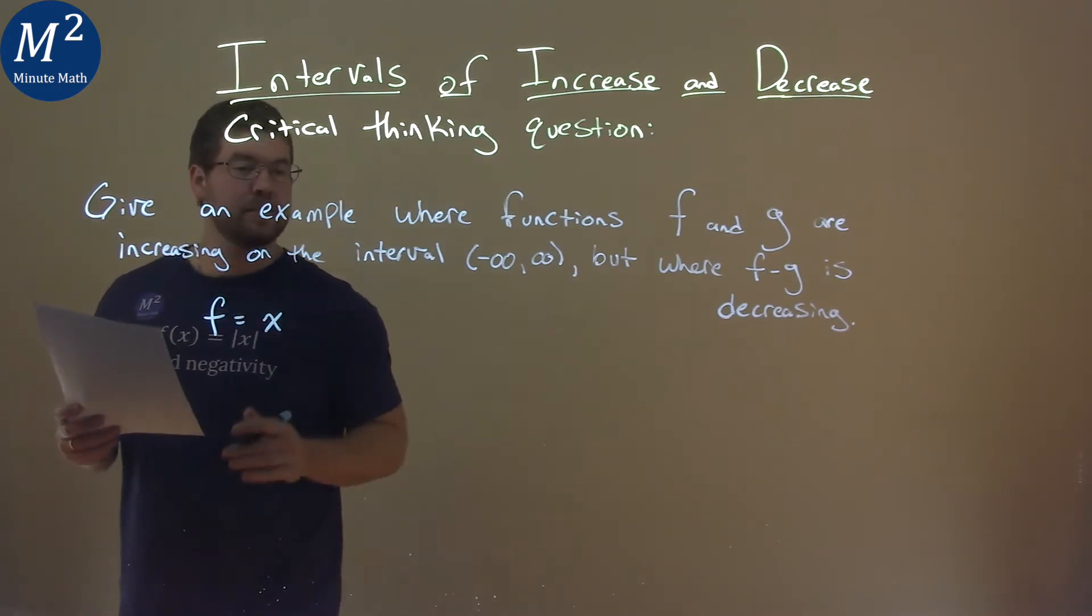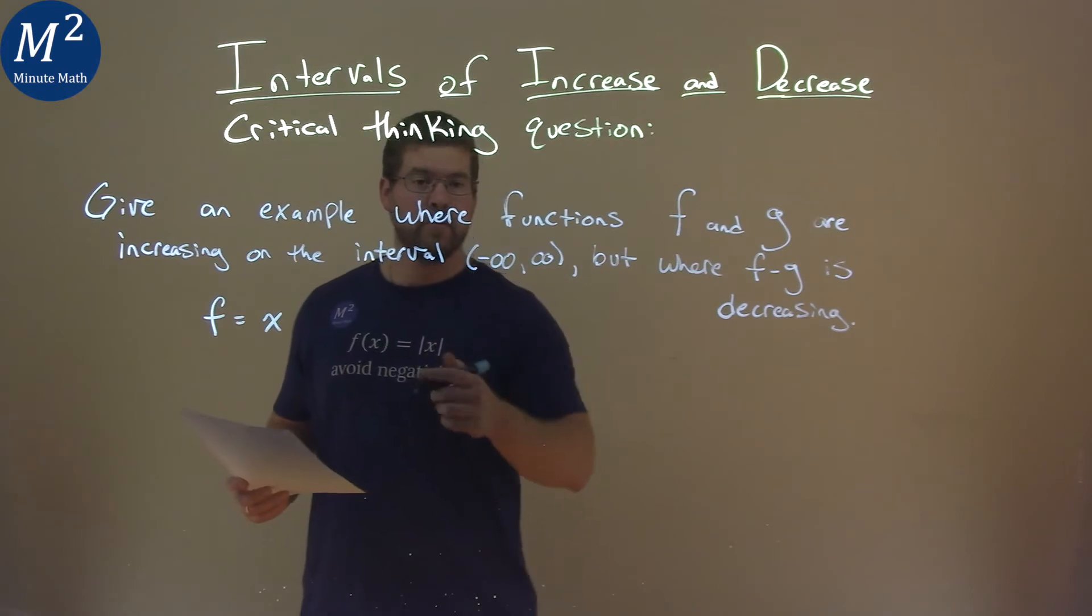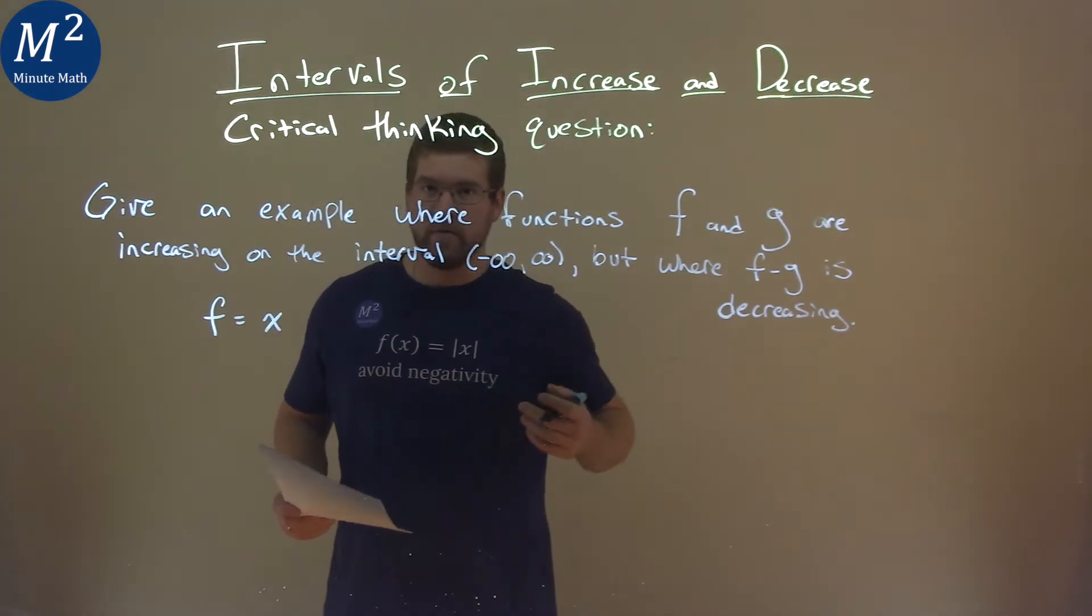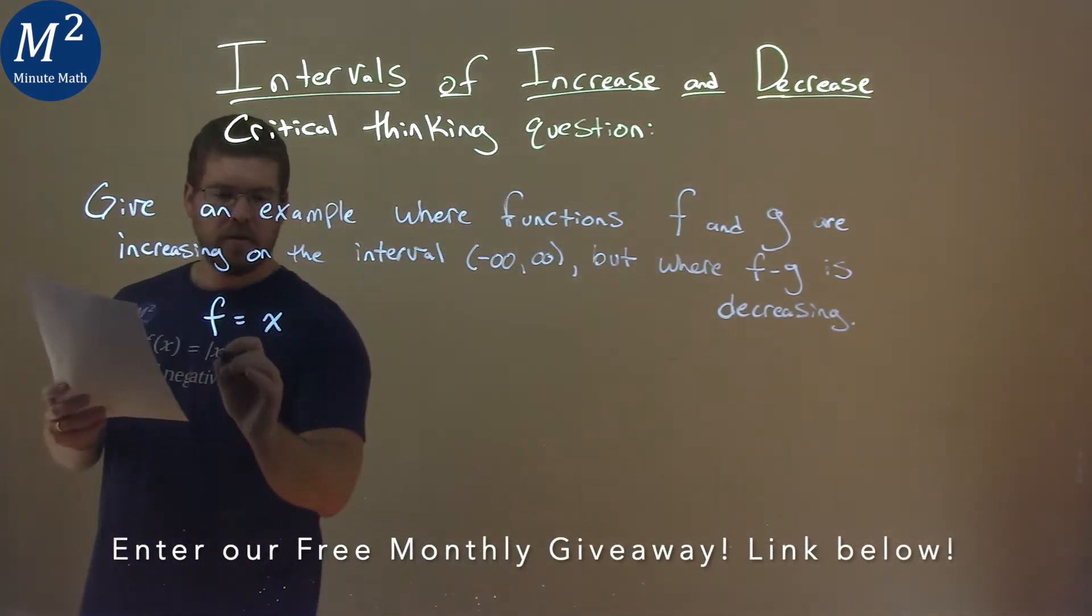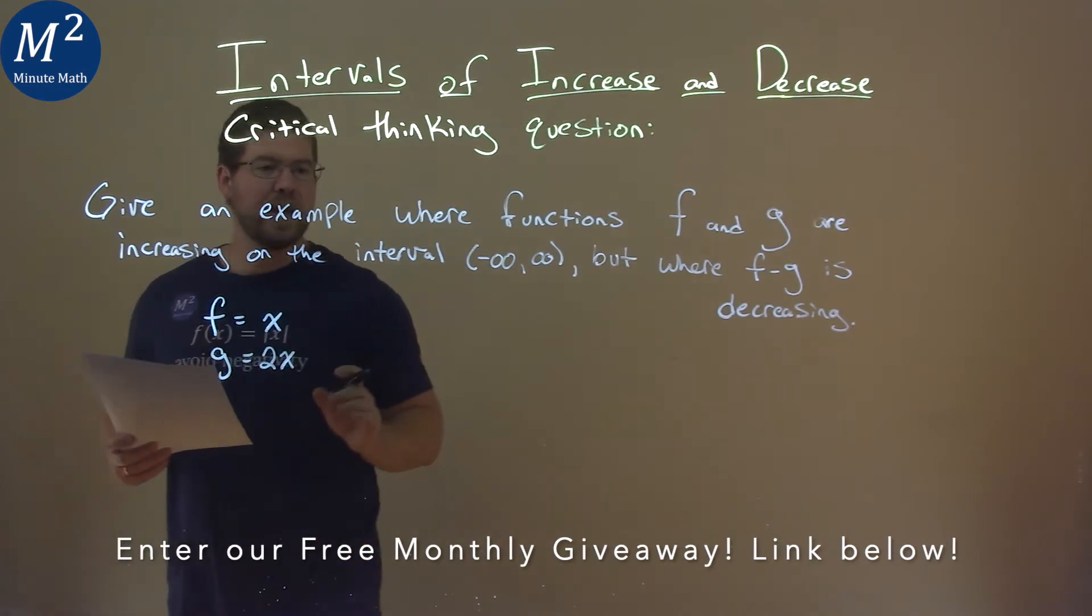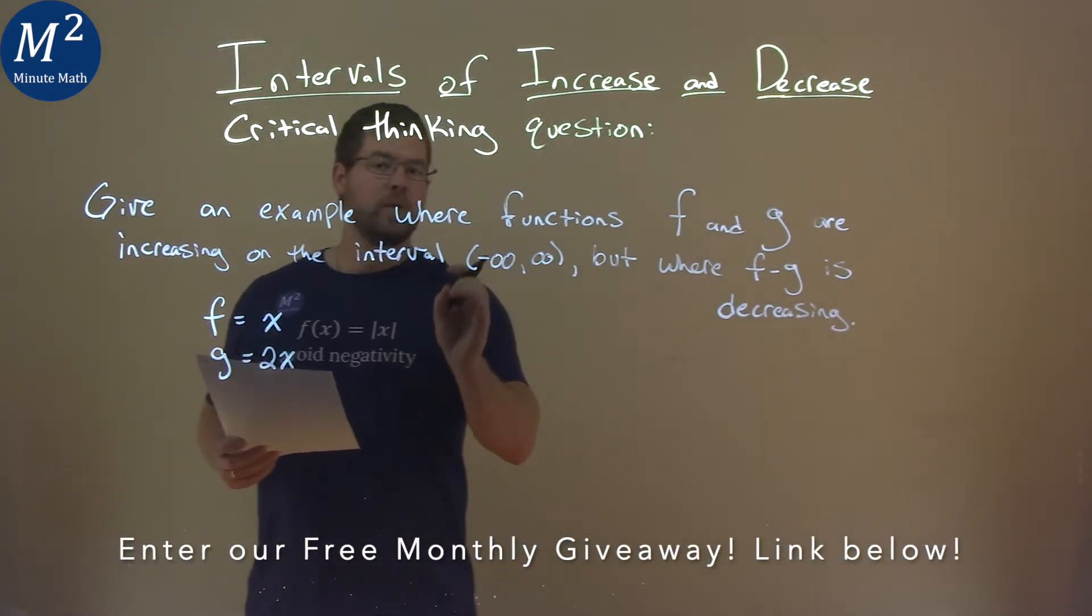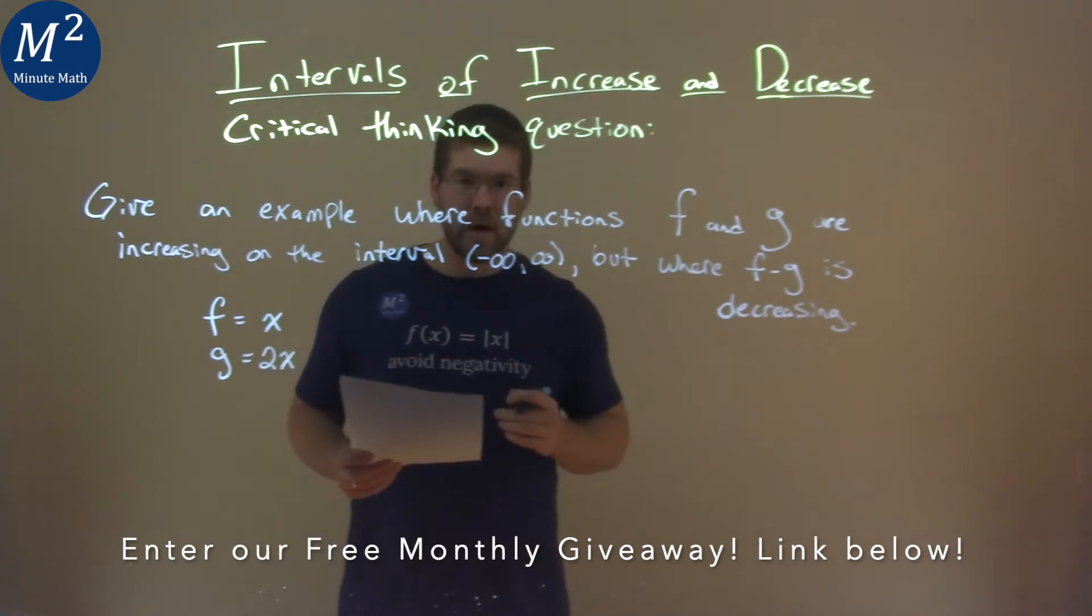Our function f is equal to just x. That is increasing on the interval from negative infinity to positive infinity. What about g? Let's say g is equal to 2x. Again, this interval is increasing from negative infinity to positive infinity.